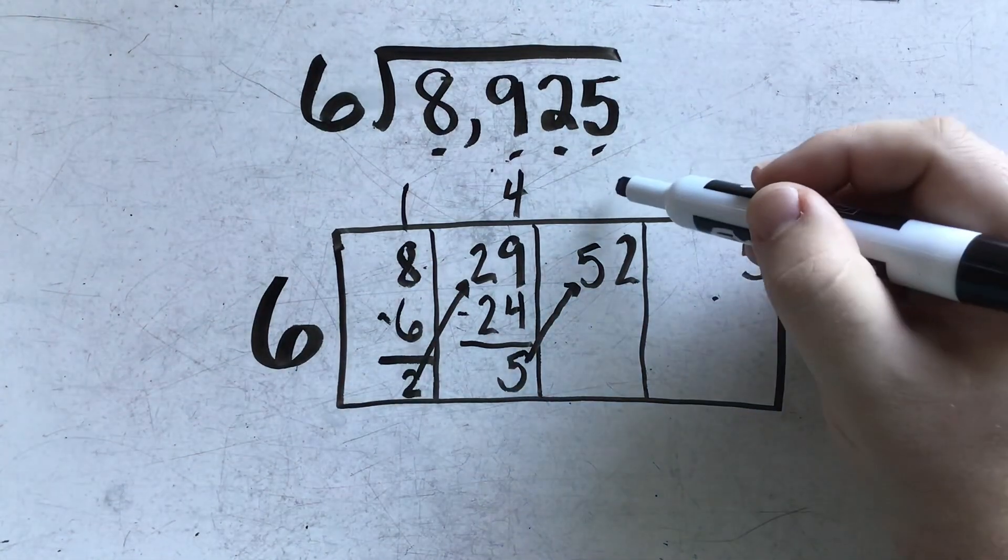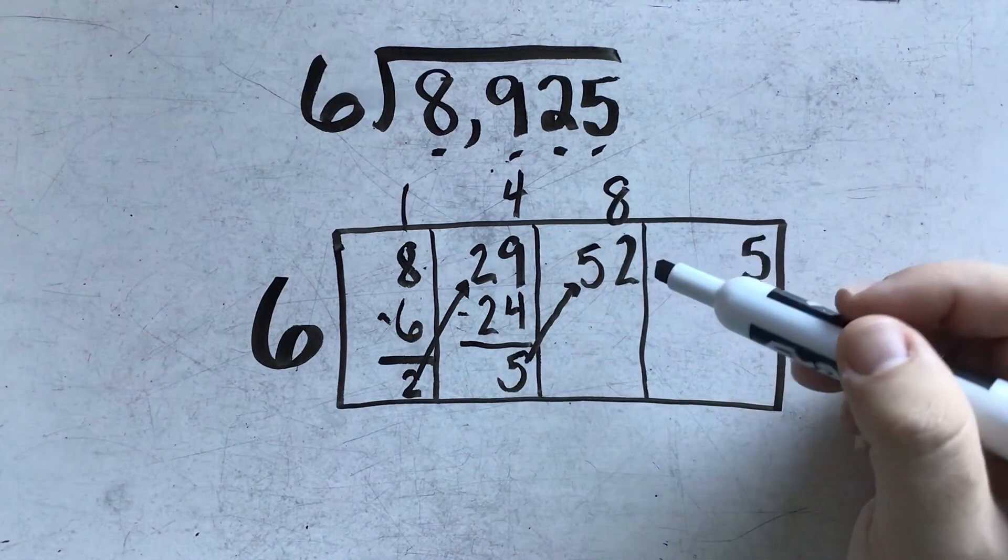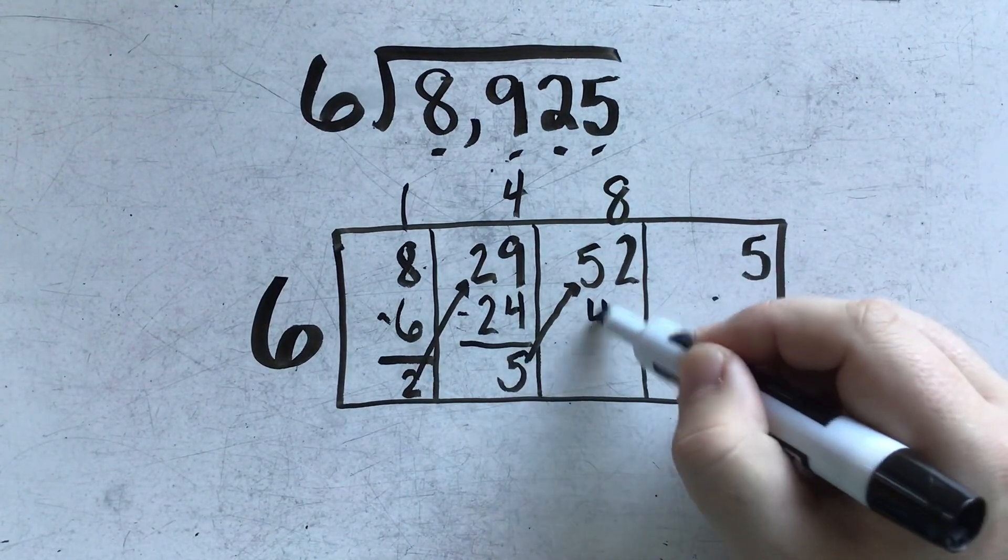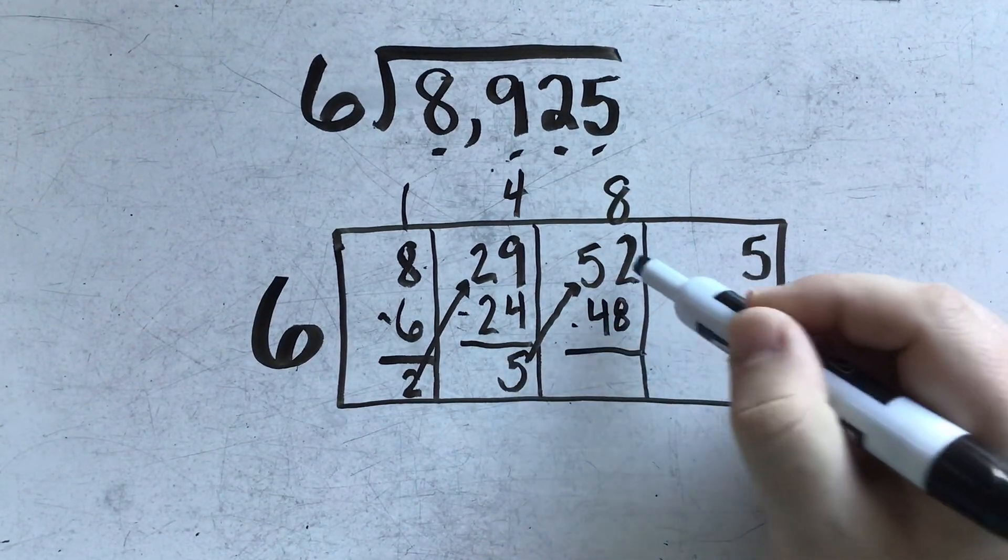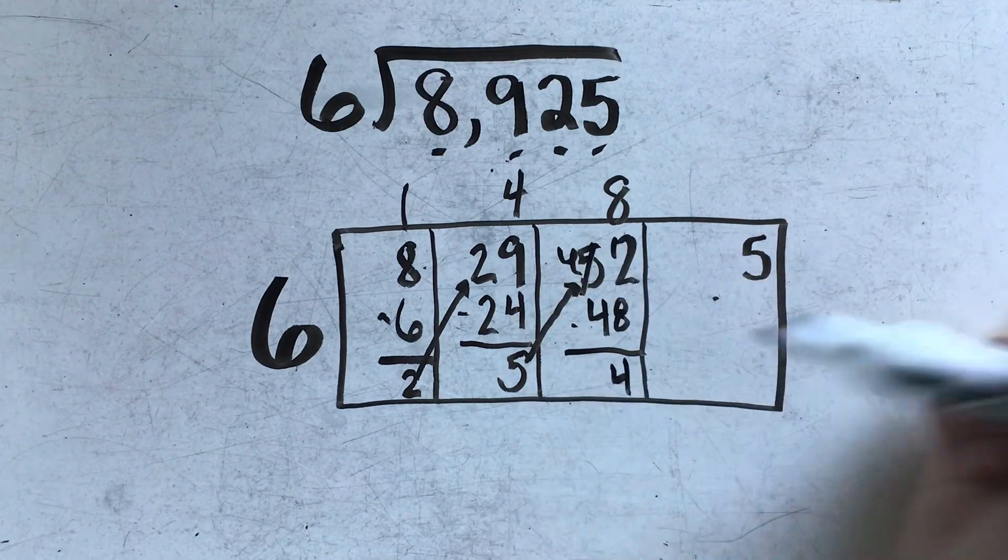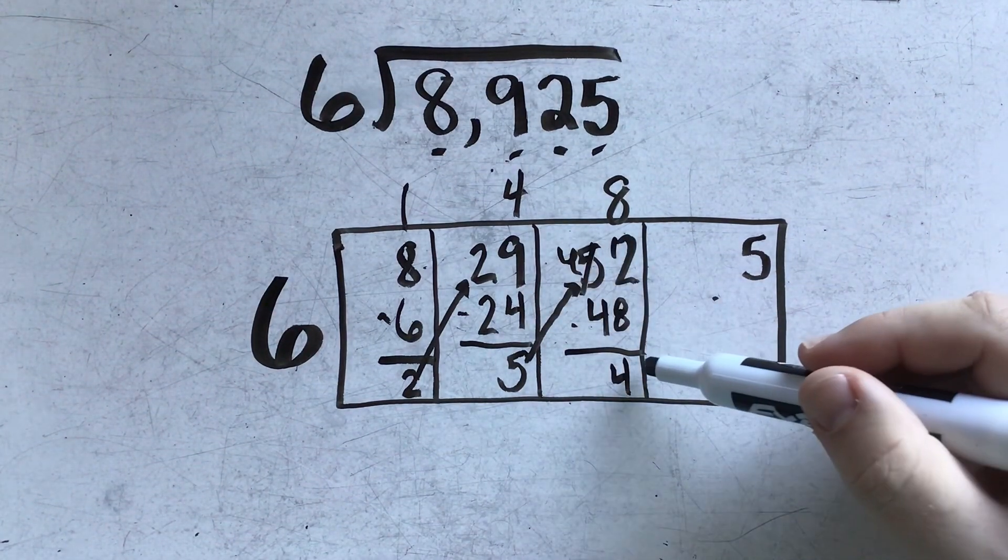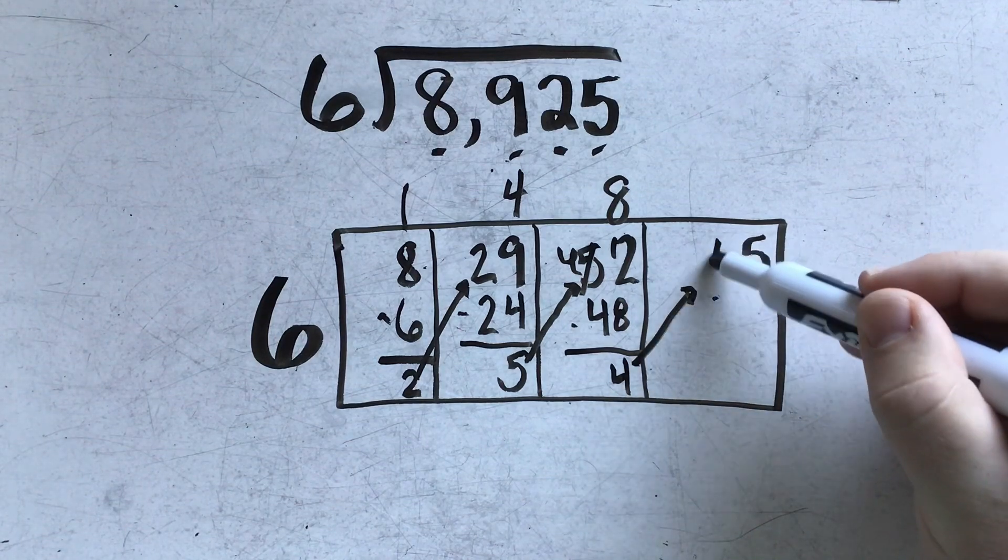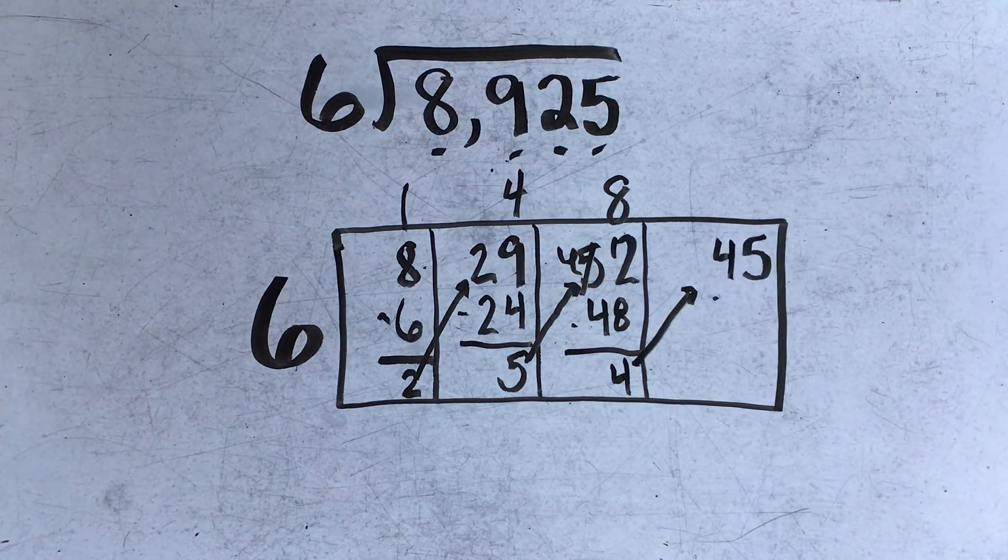6 goes into 52, 8 times. 8 times 6 is 48. And when I subtract, I end up with 4 left over. I take that 4, and once again move it right next door into the box.